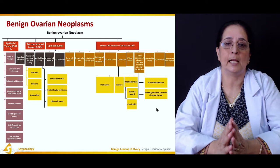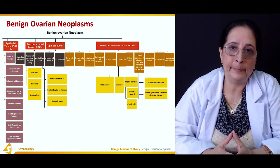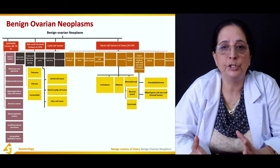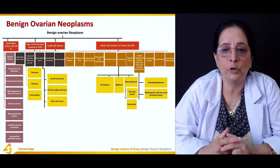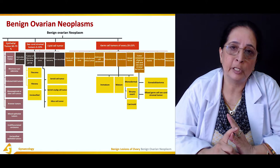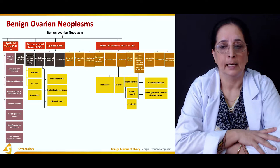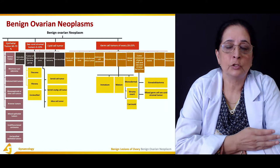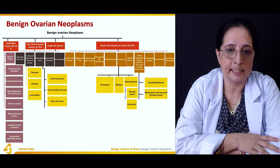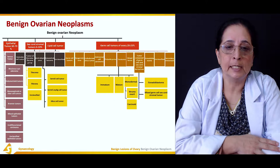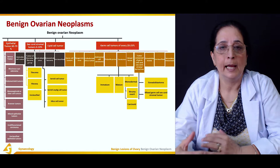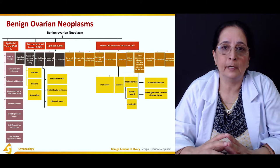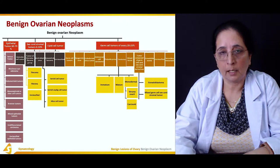In summary, the most common ovarian tumors are epithelial tumors, followed by germ cell tumors — which include dysgerminoma, endodermal sinus tumor, embryonal cell tumor, and teratomas (mature, immature, or monodermal). Sex cord stromal tumors include thecomas, fibromas, and unclassified types. All these tumor types are classified depending on the cells from which they originate and the microscopic appearance of the removed tissue.